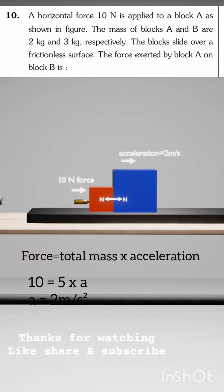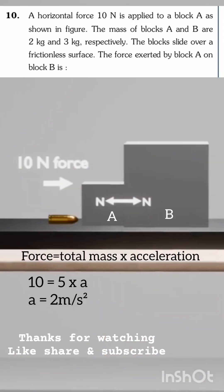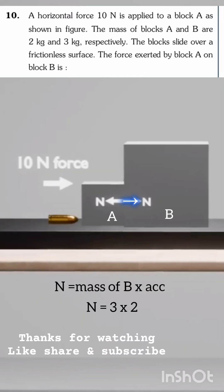Therefore, each block accelerates at the rate of 2 meters per second squared. Now the force exerted on block B by A is N. Therefore, N equals mass of block B times acceleration, N equals 3 times 2 equals 6 newtons. Therefore, the force on block B is 6 newtons.